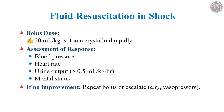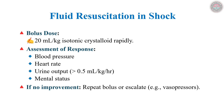In hypovolemic or septic shock, administer a 20 ml per kilogram bolus of isotonic crystalloid — normal saline or Ringer's lactate — over 15 to 30 minutes. Assess response via blood pressure, heart rate, urine output, and mentation. If no improvement, repeat the bolus or initiate vasopressors. Timely intervention is critical to prevent irreversible organ damage.